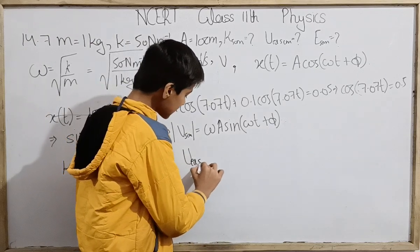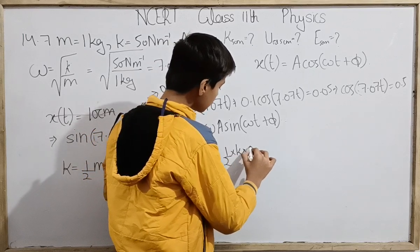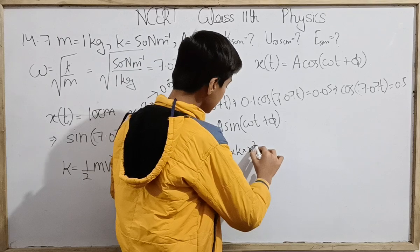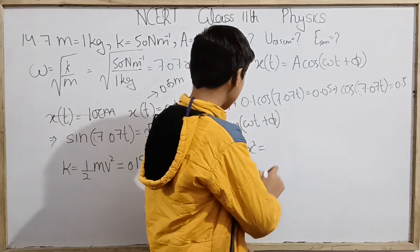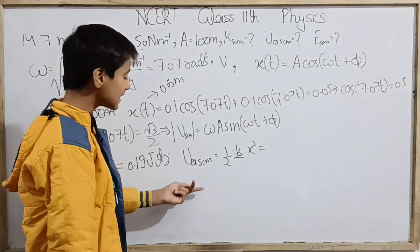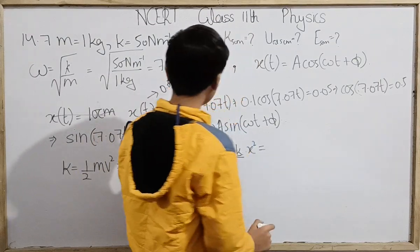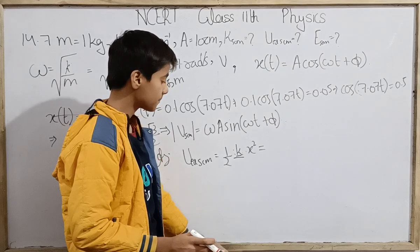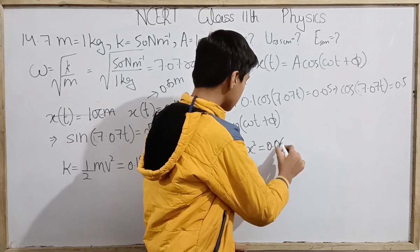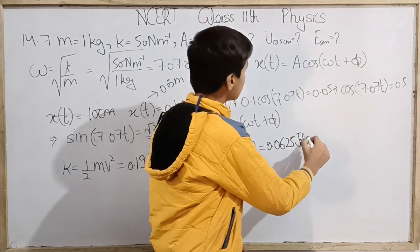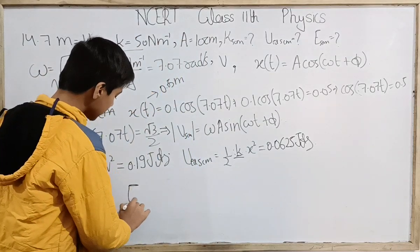Potential energy, that's rather elastic potential energy at 5 centimeter, is half k x squared. You can put sine if you want, but there's really no necessary need for that. We can put k here, x here. x is 0.05 meter, k is 50 newton per meter. So we are just getting 0.0625 joules right here. So at 5 centimeter, elastic potential energy is this much.